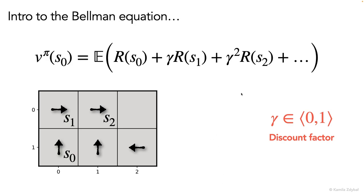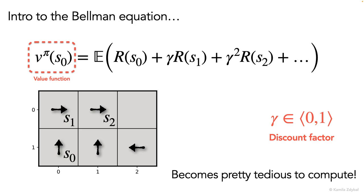Now, if we were able to compute the expected value of this total payoff, that would give us something that we call a value function. It's a number that tells us how valuable it is to be in the current state s zero, given the rewards that await us in the future. And as you can see from this whole summation, this is a really tedious expression to compute once the environment gets large.